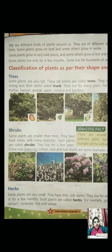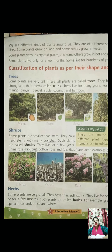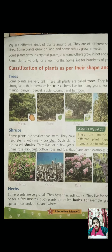Now the other topic is shrubs. Some plants are smaller than trees — not as big, a little smaller. They have a hard stem and many branches. Such plants are called shrubs. They live for a few years. Examples are rose, hibiscus, cotton, and tulsi. Tulsi and cotton are common in everyone's house. Nowadays, mama must be giving you a lot of tulsi for immunity. These are some examples of shrubs.